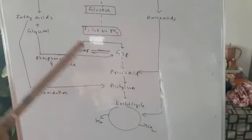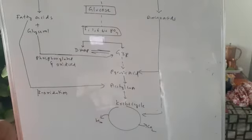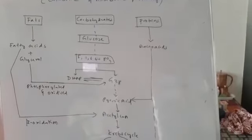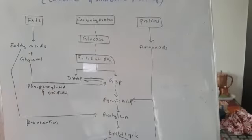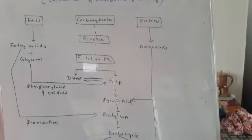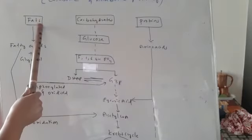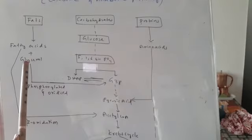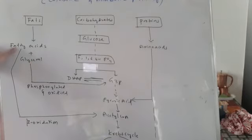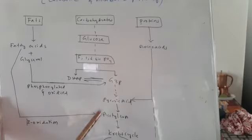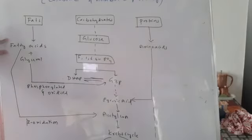Now, imagine there are no carbohydrates in the cell. If the cell needs energy, proteins and fats can also act as respiratory substrates. Fats break down to release fatty acids and glycerol. These fatty acids undergo beta-oxidation and convert into acetyl-CoA, and that is how they enter into the respiratory pathway. Acetyl-CoA then enters into the Krebs cycle.